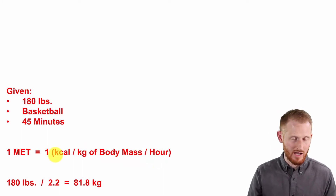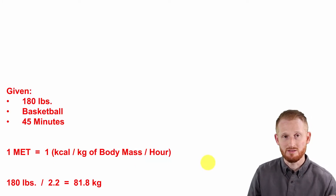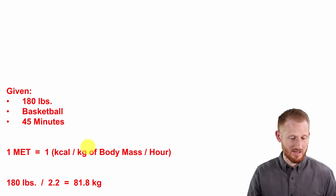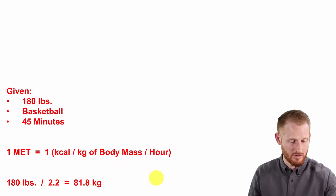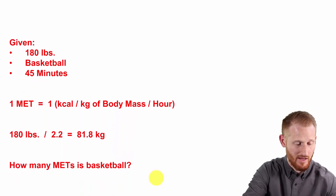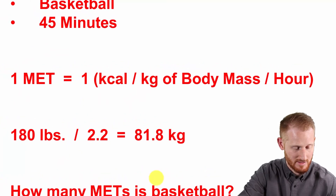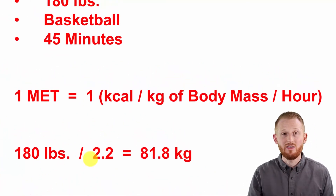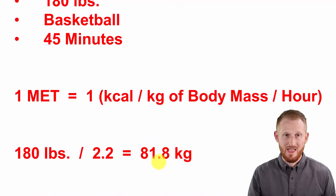So if something's two METs, it would be two calories. Something's five METs, it's five calories. We're going to need to convert his body mass from pounds to kilograms, because as we can see in this formula, we have body mass in kilograms. He weighs 180 pounds — divide that by 2.2, and that gives us 81.8 kilograms.